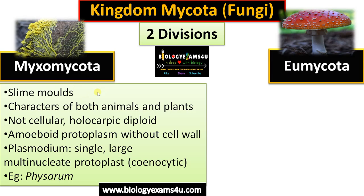Myxomycota shows characteristics of both animals and plants. It is acellular, holocarpic, and diploid. Holocarpic means the entire thallus becomes a reproductive structure. It is having amoeboid protoplasm without a cell wall. Often a plasmodium — a single large multinucleate protoplasm — is present, which is called the coenocytic condition. Example is Physarum.